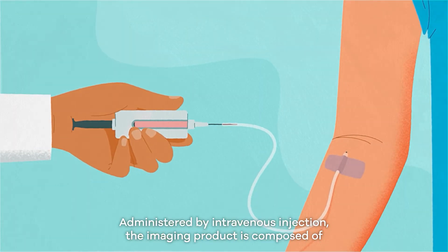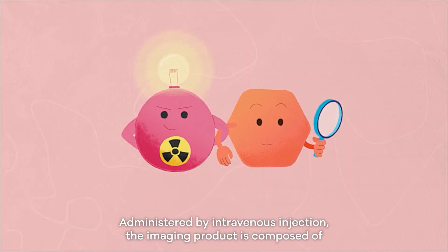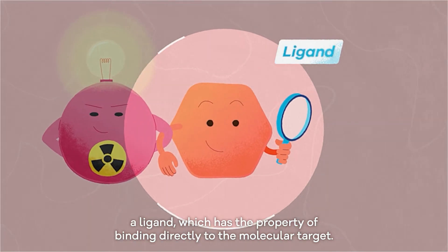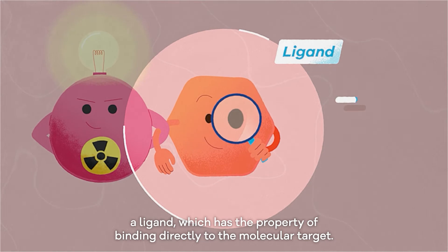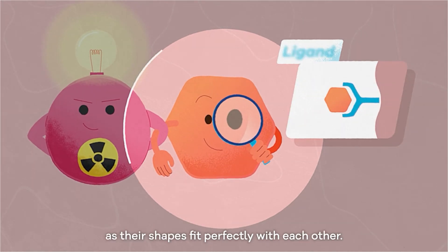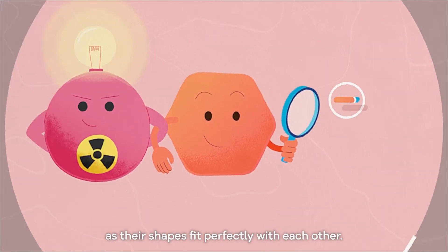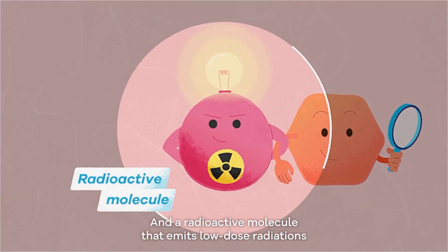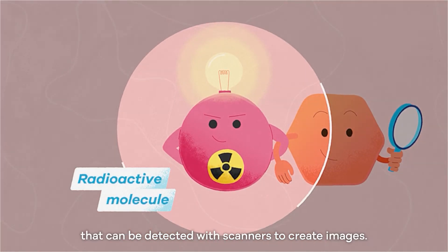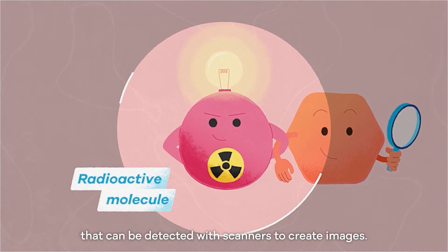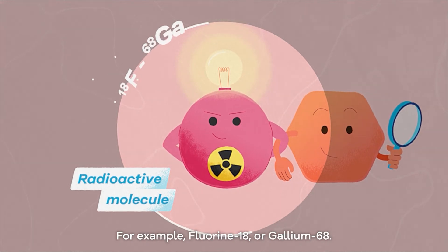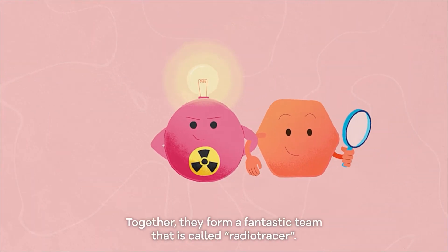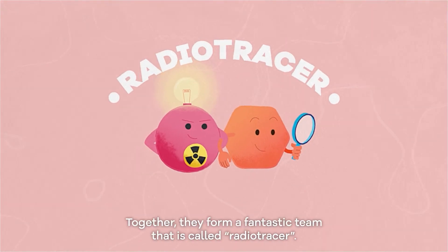Administered by intravenous injection, the imaging product is composed of a ligand which has the property of binding directly to the molecular target. It is specific to it, as their shapes fit perfectly with each other. And a radioactive molecule that emits low-dose radiations that can be detected with scanners to create images — for example, Fluor-18 or Gallium-68. Together they form a fantastic team called the Radiotracer.